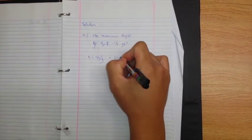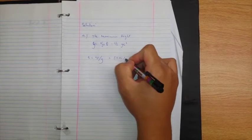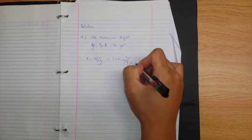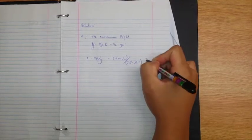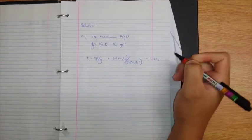Which is 12.0 meters per second divided by 9.8 meters per second squared, which equals 1.22 seconds. That is our time.